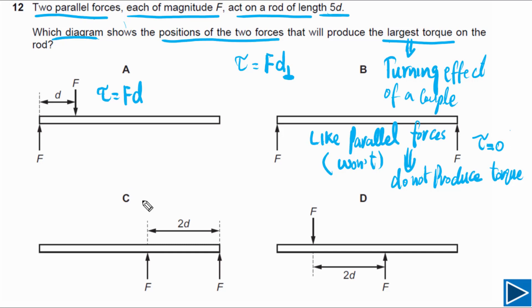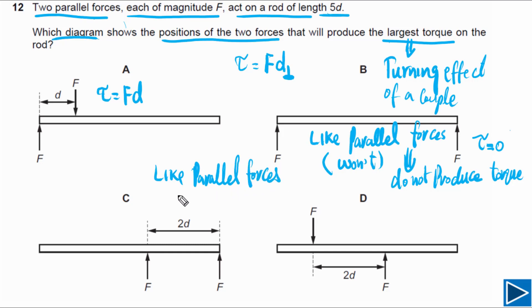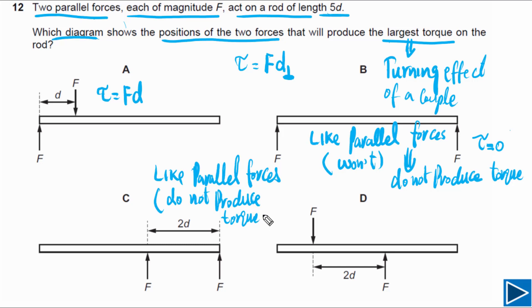For option C, again we have two like parallel forces. They do not form a couple and do not produce a torque because they are like parallel forces. Therefore, torque in this case is also equal to zero.